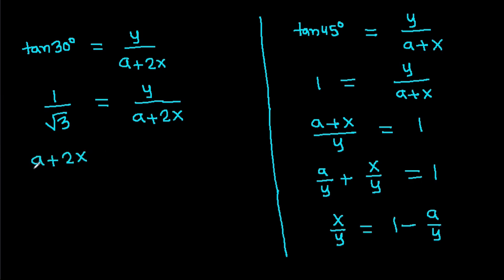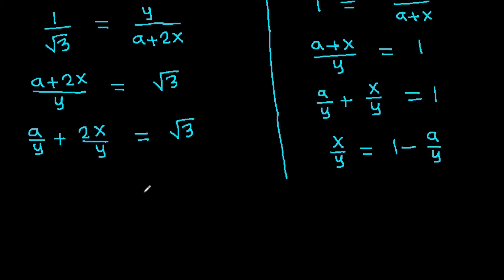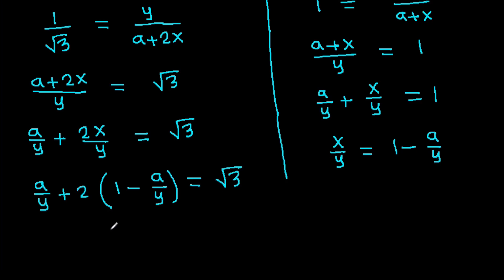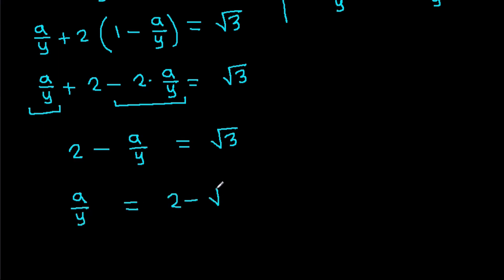From the equations: A over Y plus 2·(X over Y) equals root 3. Substituting X over Y equals 1 minus a over Y, we get A over Y plus 2 minus 2·(A over Y) equals root 3. This simplifies to 2 minus A over Y equals root 3, so A over Y equals 2 minus root 3.